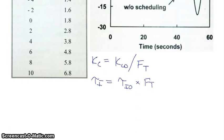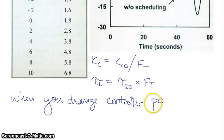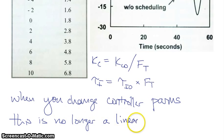Now note one last thing before we close this screencast. When, in this scenario, when you change your controller parameters, this is no longer a linear control model. And so in order to combat the highly nonlinear response of your CSTR, you need to make a nonlinear control model and that's basically what this is.